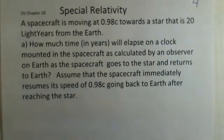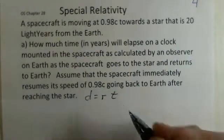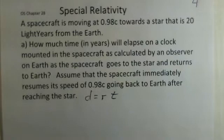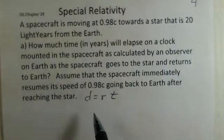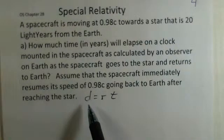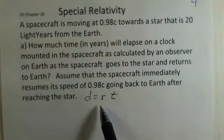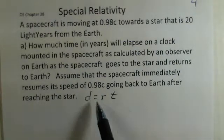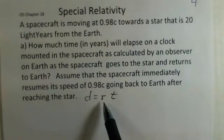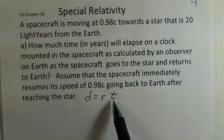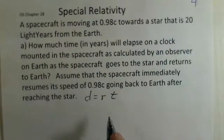In doing this, we can still use distance equals rate multiplied by time. We have a distance of 20 light years. The light years, how far light would travel in one year. Our rate will be 0.98 times the speed of light. And in these units, when we divide light years by the speed of light measured in C, we'll get the number of years.